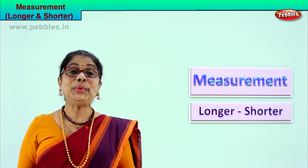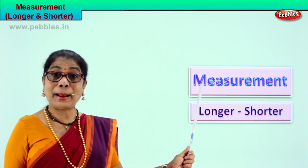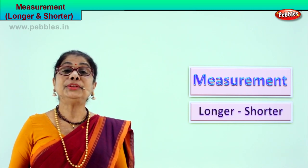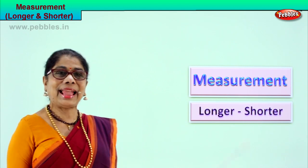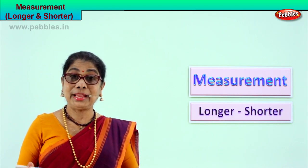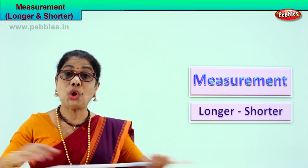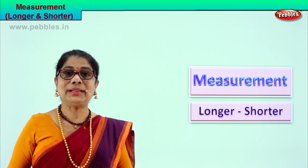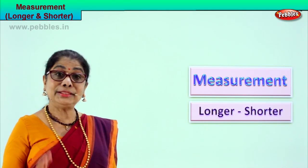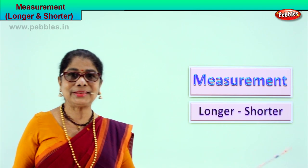Hi children, today we are learning something different and interesting: measurement. We are going to compare two different measurements, so we are learning today longer and shorter. If you say longer rod, shorter rod — rods can be long or short, rulers can be longer or shorter. So we are going to compare the two sizes: short and long. This is shorter, this is longer. Measurement.